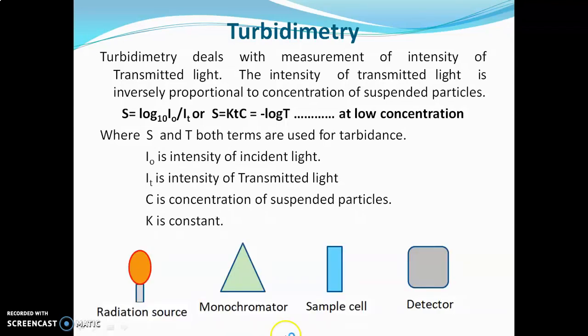In turbidometry, the radiation source, monochromator, sample cell, and detector are all in a straight line, or at 180 degrees to each other. The radiation source emits radiations, which pass through the monochromator and then through the sample cell. In the sample, some radiations are absorbed by the suspended particles and some are transmitted towards the detector.